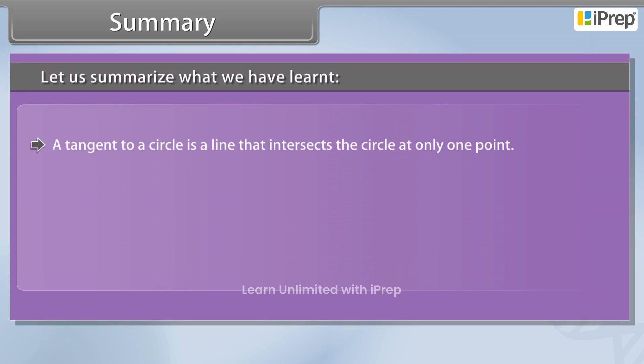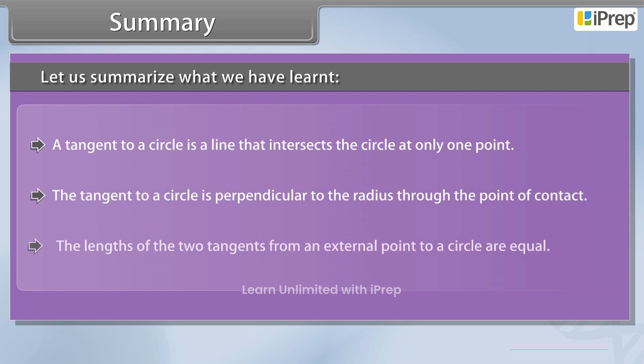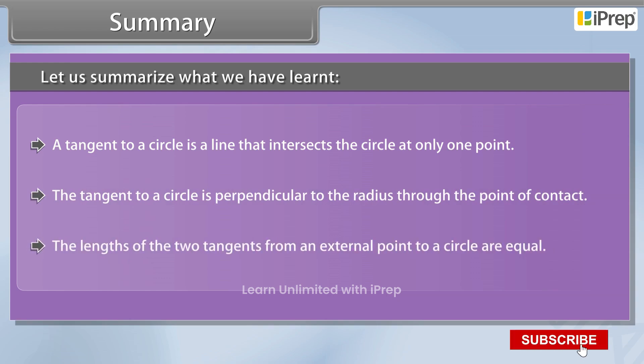A tangent to a circle is a line that intersects the circle at only one point. The tangent to a circle is perpendicular to the radius through the point of contact. The length of the two tangents from an external point to a circle are equal.